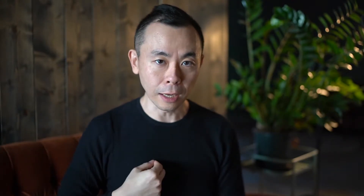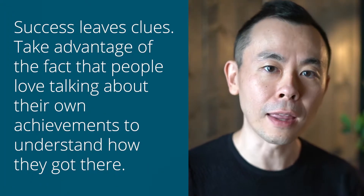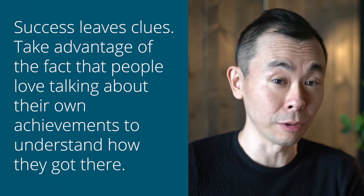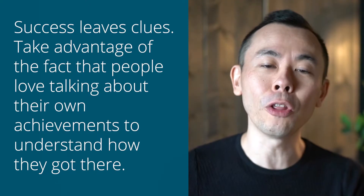What steps did they take to get from where they were to where you want to go as well? Tony Robbins says that modeling the best people in the world is the main key to success. You need to have a mentality in which you think, if they can do it, so can I. Success leaves clues. You can take advantage of the fact that people love talking about their own achievements to understand how they got there.